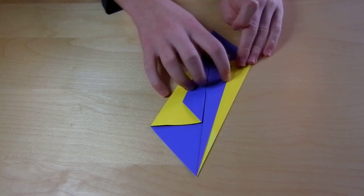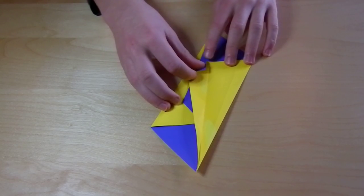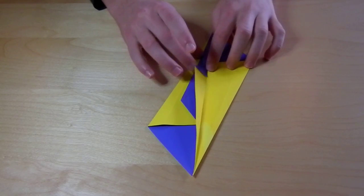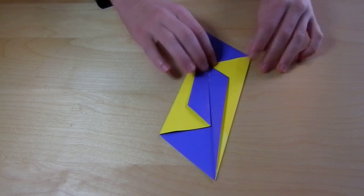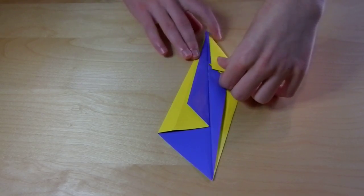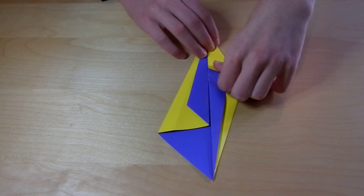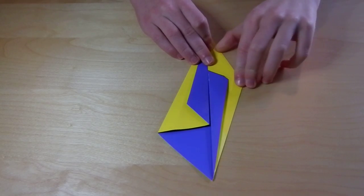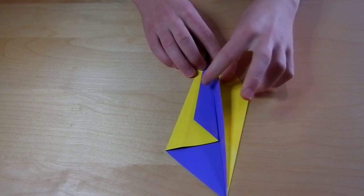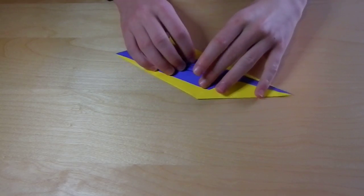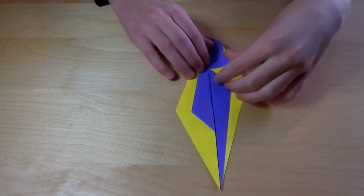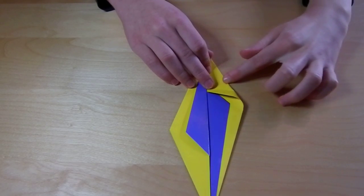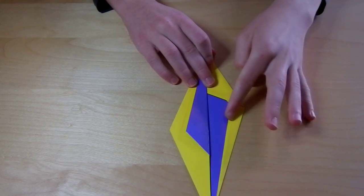And do the same thing in the opposite direction. Fold it back over, and now we're going to fold in this edge like this, crease, and tuck it underneath. Tuck it underneath.